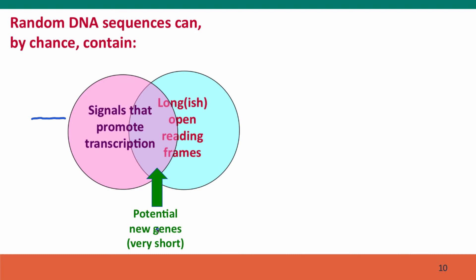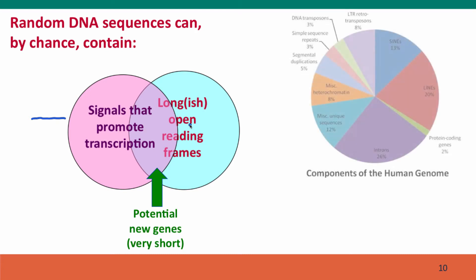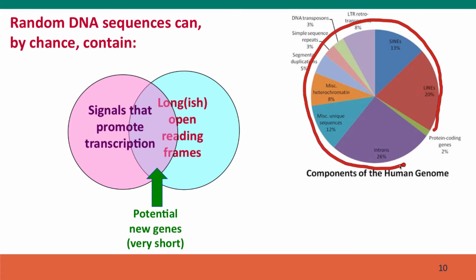Of course, these events are rare, but almost all of our genome consists of sequences that don't have any coding function. That means we have almost three billion sequences in each of our two genome copies where such events can occur. So it's almost inevitable that at some places in the genome there will be sequences by chance that promote transcription with longish open reading frames adjacent to them. If these new genes are beneficial and the protein produced actually helps the cell, natural selection can step in and select for additional genetic changes that make this new sequence more functional.